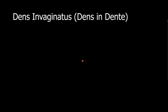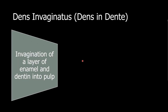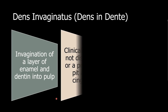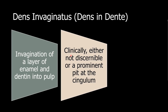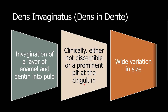So what are the features of a dens in dente on a radiograph? We see invagination of a layer of enamel and dentine into the pulp canal. Clinically, this invagination is either not seen at all or appears as a prominent pit at the cingulum. There is a wide variation in the size and depth of the invagination.